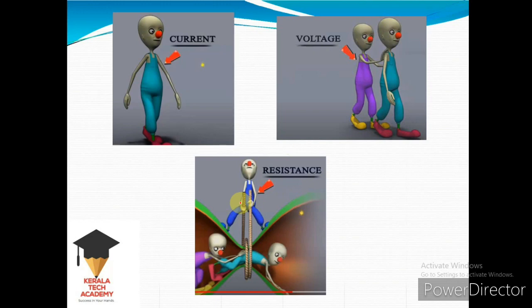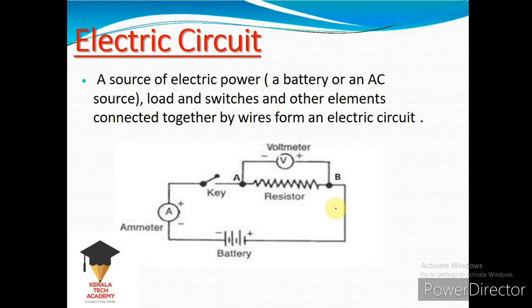Resistance is the opposition to the movement of current. In a conductor, resistance is the element that causes a disturbance to the movement of current. In an electric circuit, we have a source of electric power like a battery, a load, a switch, and other elements connected together by wires. This figure shows a battery, a switch, a resistance or resistor, an ammeter for measuring current, and a voltmeter for measuring voltage.